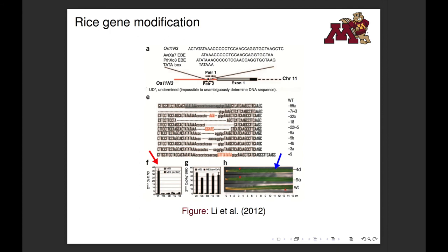One interesting example of the use of TALENs is to produce gene knockouts to develop disease-immune crop varieties. Researchers at Iowa State University successfully used TALENs to knock out a bacterial leaf blight susceptibility gene in rice. It is interesting that researchers would use TALENs in this way because this is the system from which TALENs were originally derived.